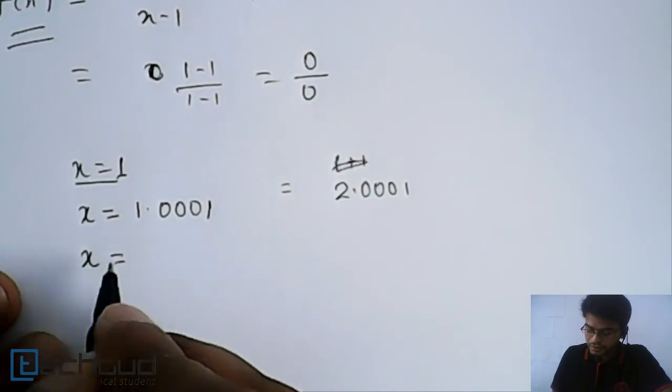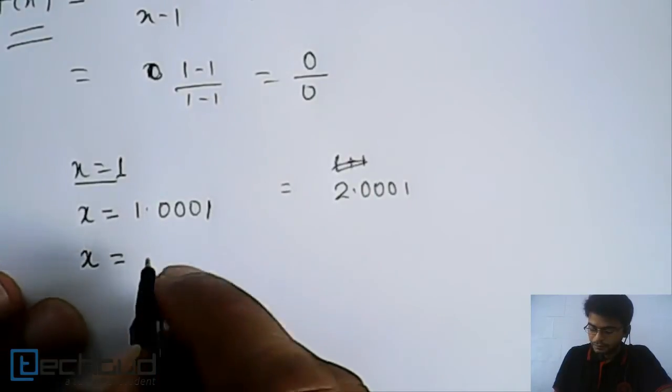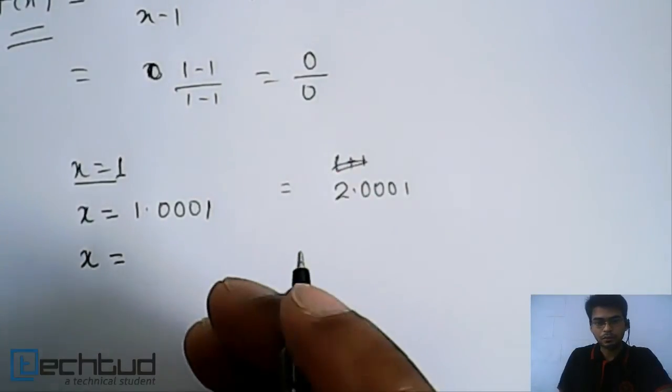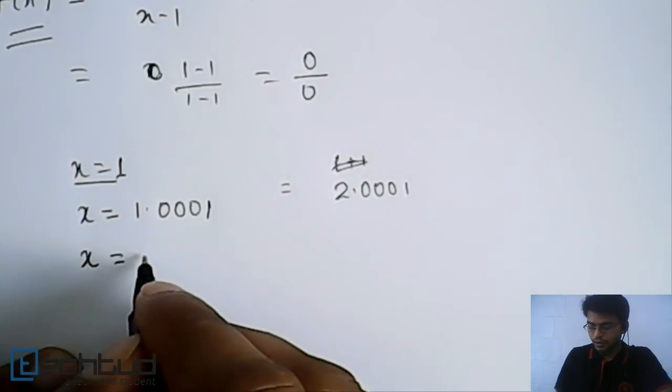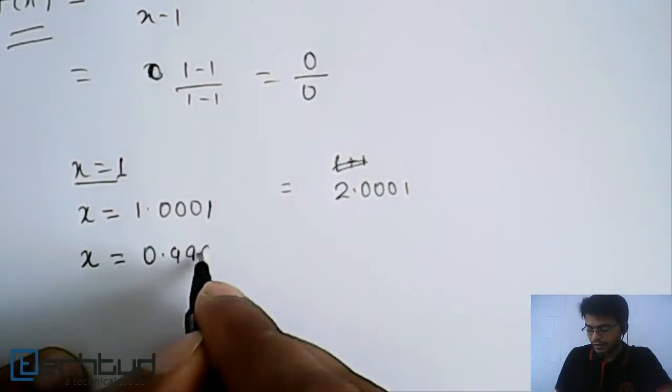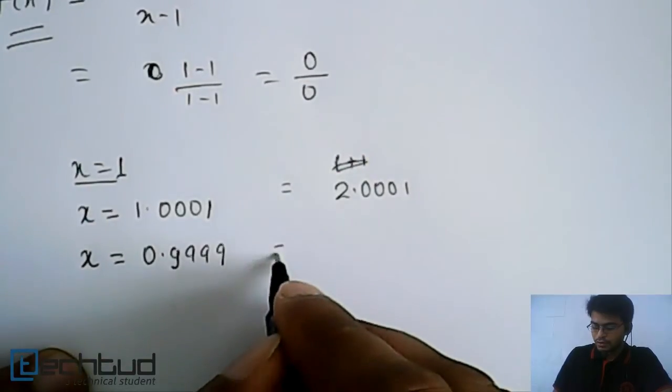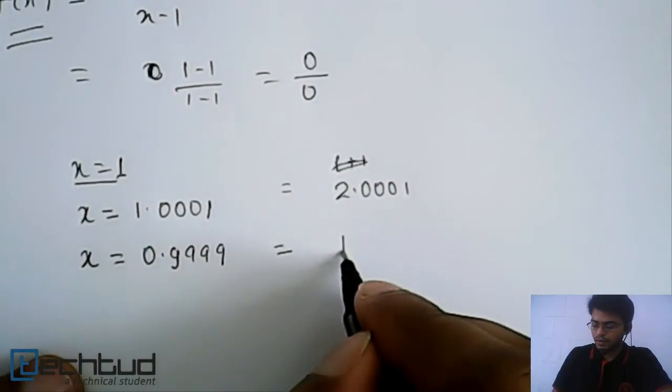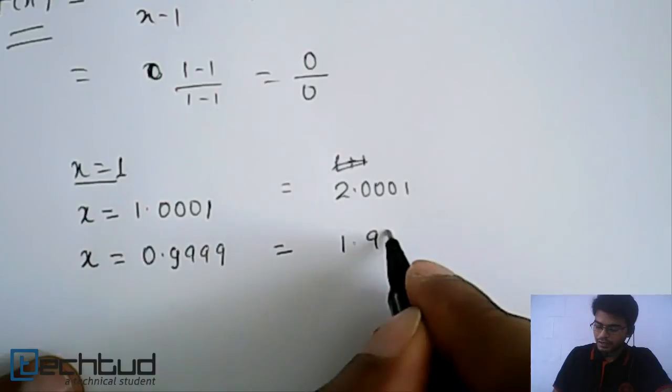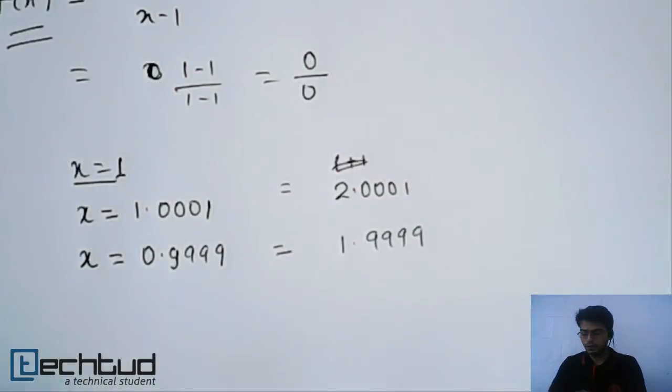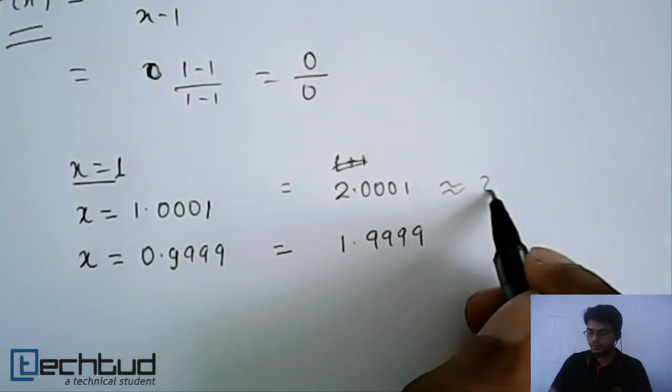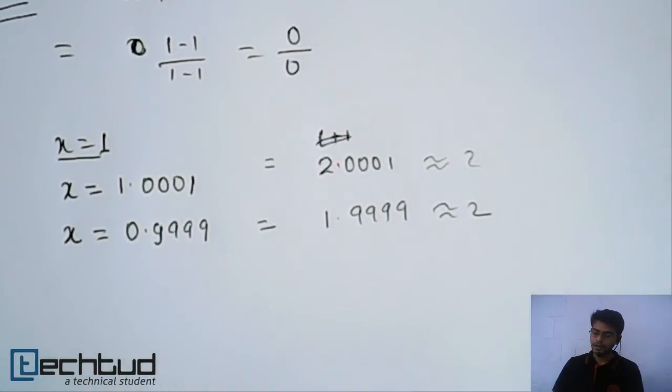Similarly, if we say what is the value of this function f(x) at just a point which is just before x equal to 1, so 0.9999 like this, it will again come out to be 1.9999 something like this. So these values are very close to basically 2, very close to 2.